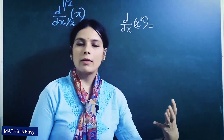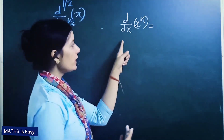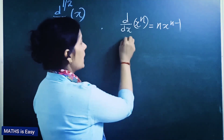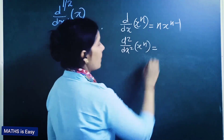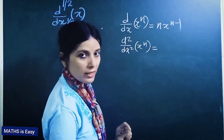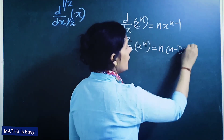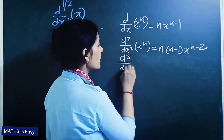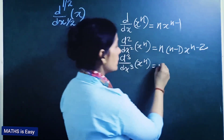To understand this concept, we will start from the first derivative of x raised to n. x raised to n is a function, and if we differentiate it with respect to x, its derivative would be n·x^(n-1). The second derivative means two times differentiation — differentiating n·x^(n-1) once more gives us n(n-1)·x^(n-2).